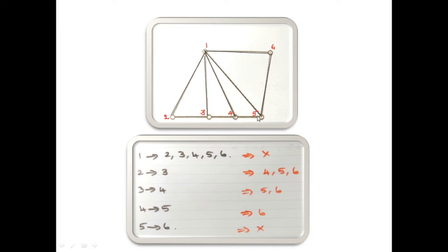Again, four is adjacent to five, so the non-adjacent is six. Five is adjacent to six, so there are no non-adjacent vertices remaining, because there are totally six vertices. So six is already adjacent to the others — no need to check one, two, three, etc. because they are already adjacent. So every time when you see a vertex you have to look at the higher vertices and find whose non-adjacent vertices remain.